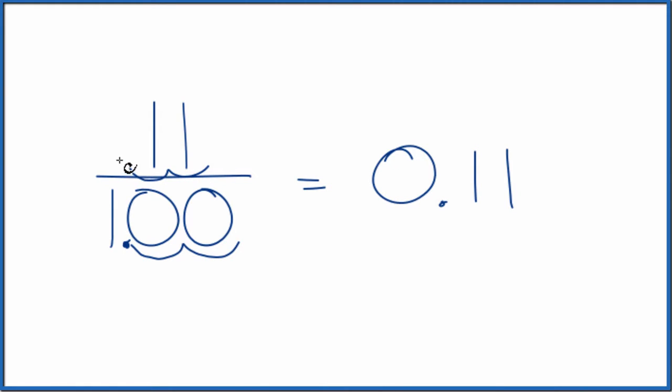So one, two, we put our decimal point there, and we end up with 0.11 over one, which is 0.11.